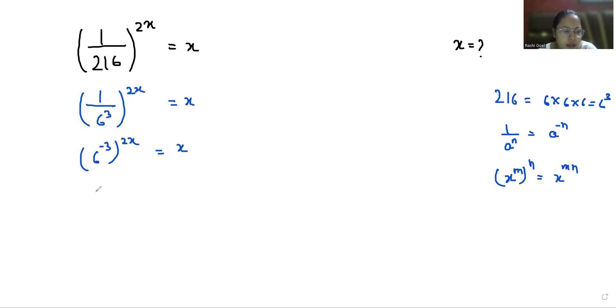Now I can multiply both sides with power 1/x so we can eliminate this. So 6^(-6) = x^(1/x). Again I'm going to use this exponent rule.